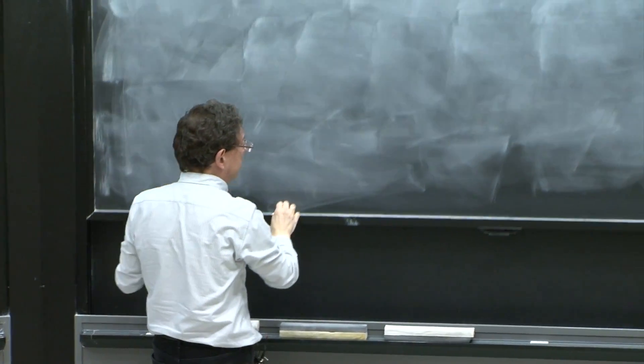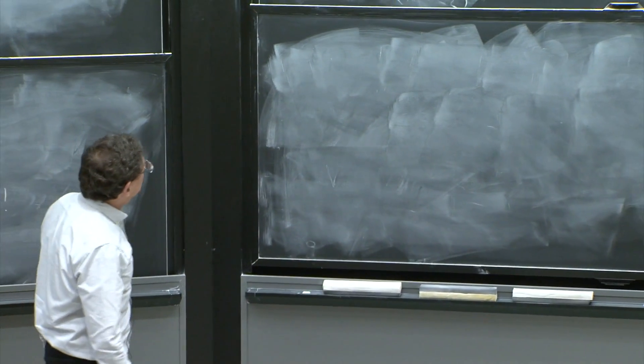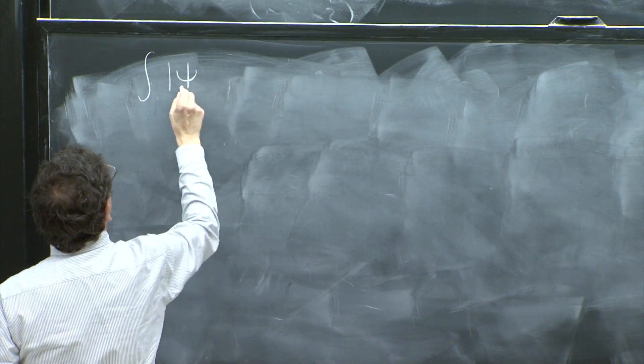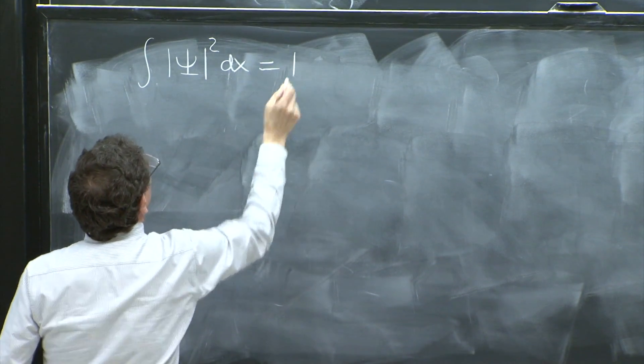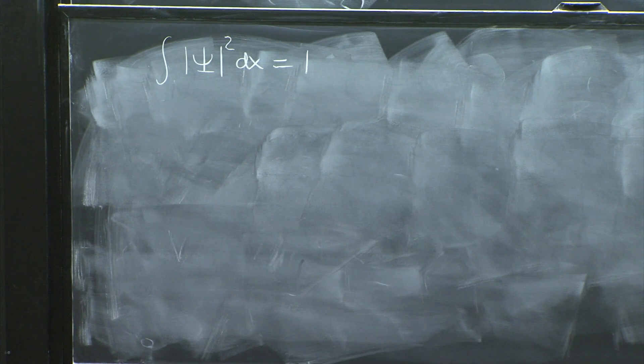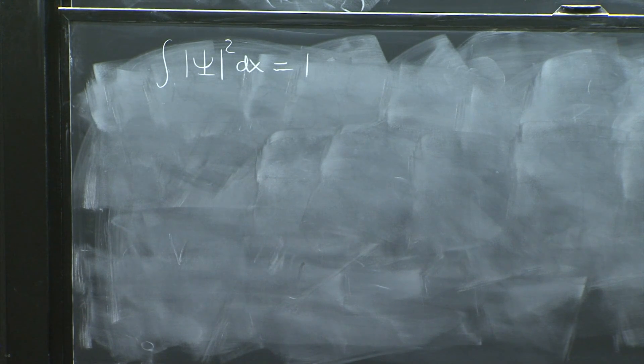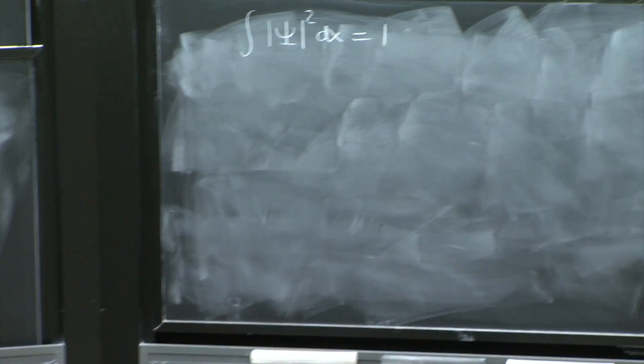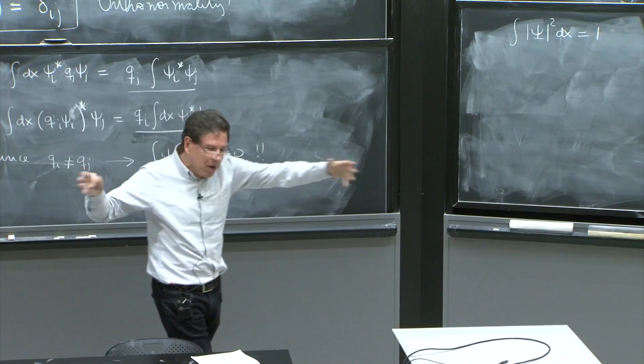The other thing that you can check is that if the wave function norm is equal to 1, what does it imply for the alpha i's? You see, the wave function is normalized, but it's now a function of alpha 1, alpha 2, alpha 3, alpha 4.